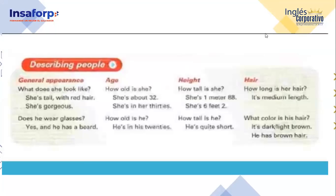I want to show you this question. For general appearance, we have these two questions: What does she look like? What is the meaning of this question? ¿Cómo se mira ella? ¿Cuál es su apariencia? ¿Cómo se ve? ¿Cuál es su apariencia física? Then, she is tall with red hair and she is gorgeous. Does he wear glasses? Yes, and he has a beard.